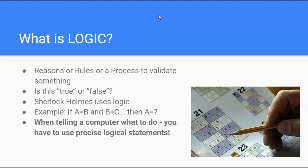So think of Sherlock Holmes. Sherlock Holmes uses logic. That is his skill to think about how something happened or what he can know from what he sees. For example, if you know that a equals b and you know that b equals c, then what can you say a equals? You can deduce, you can use logic to say that a equals c in this statement here. That is using your mind to figure out what a equals.